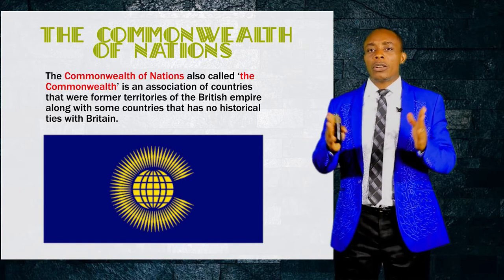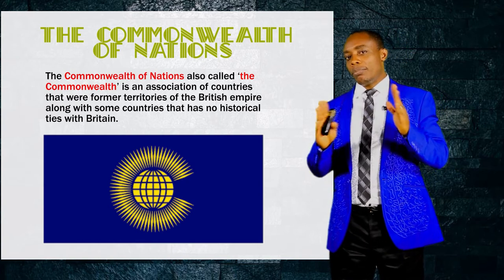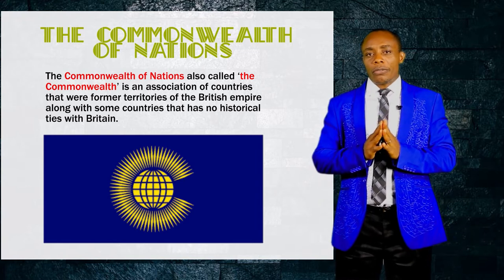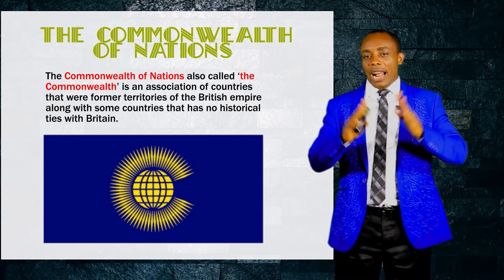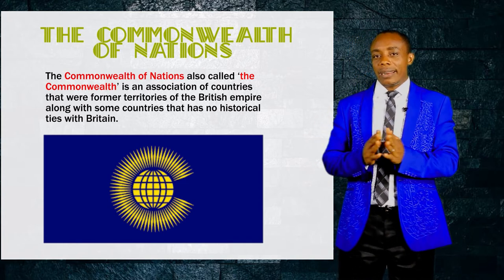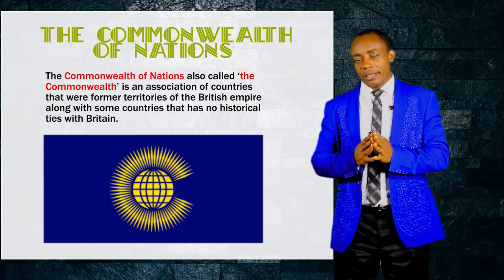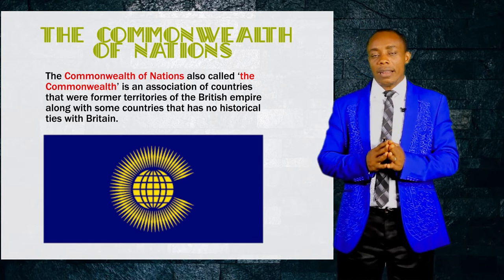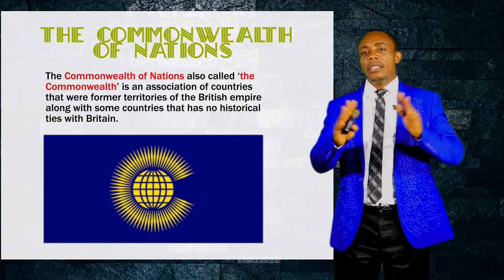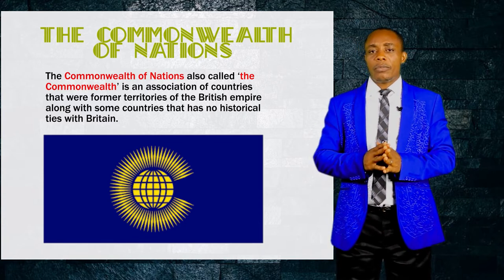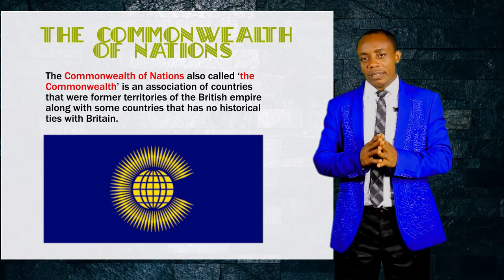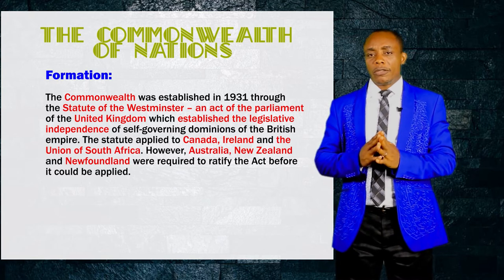as well as some other countries that had no historical ties with the British Empire. Initially, it was composed of Britain and her dominions — those countries that were colonized by Britain but were later granted self-independence. These include Canada, Australia and Ireland, as well as South Africa. These were known as dominions because they achieved self-independence, not actual independence.